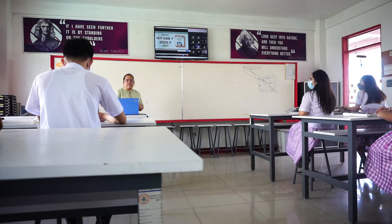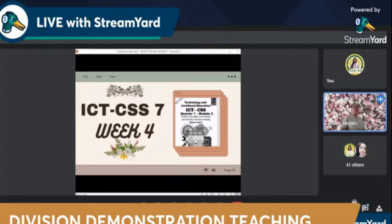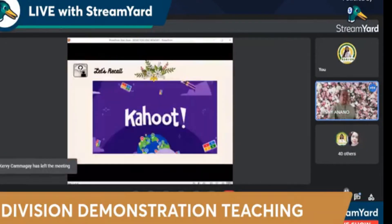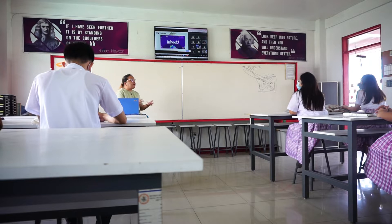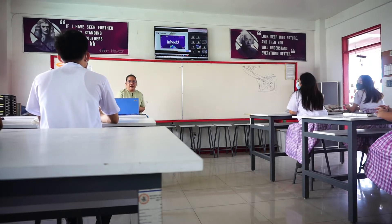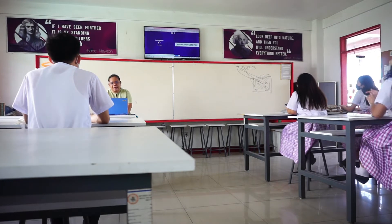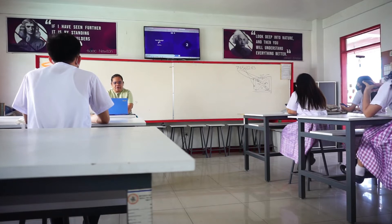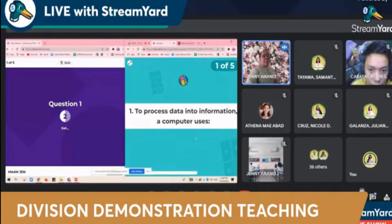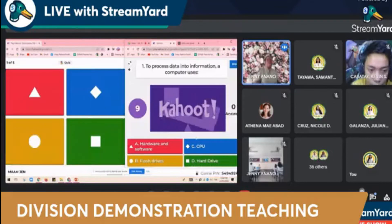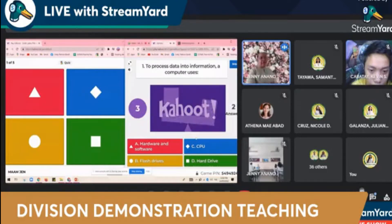Let's review what we discussed last week. Go to your Kahoot, get ready everyone. Those in Google Meet, get ready — I'll be reading the questions and choices. Number one: to process data into information, a computer uses — A. hardware and software, B. flash drives, C. CPU, D. hard drive.